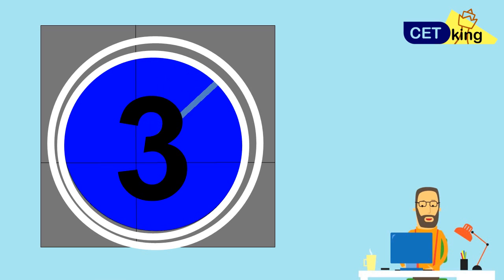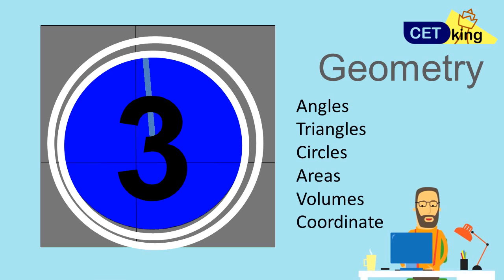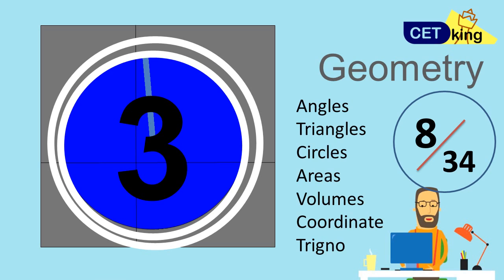At number three, we have geometry. Geometry includes angles, triangles, circles, areas, volumes, coordinate geometry, and trigonometry. Compared with numbers, geometry has only formulas — if you understand the formulas and use shortcuts, this is one of the best areas where you can maximize your score. CAT follows the rule: difficult topics get easy questions, easy topics get fewer questions. Since very few people like geometry, there will be more questions — out of 34 questions, 8 questions are going to be based on geometry.